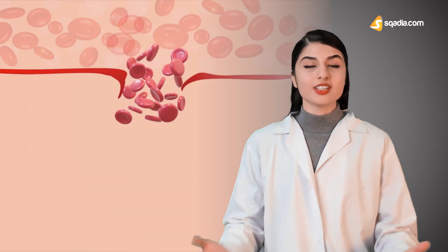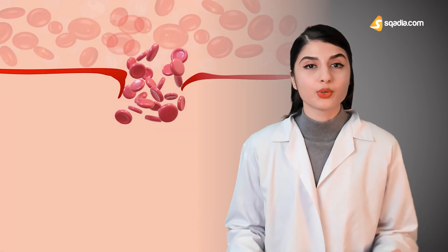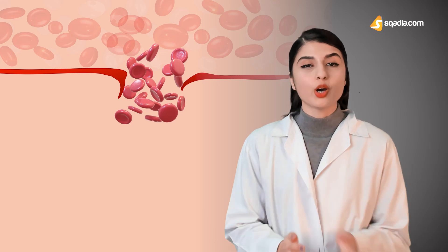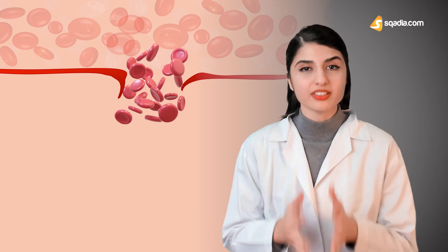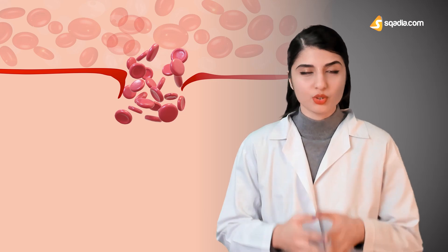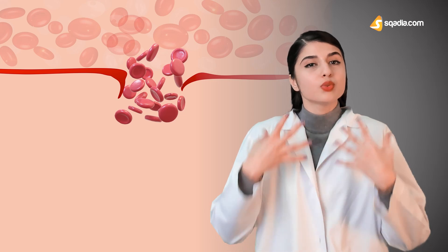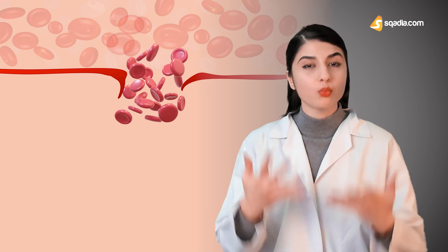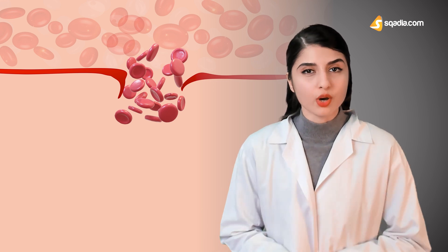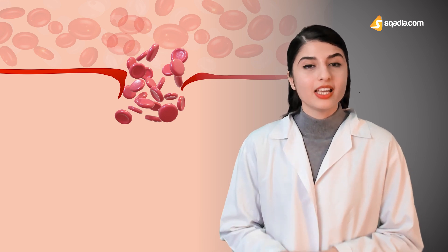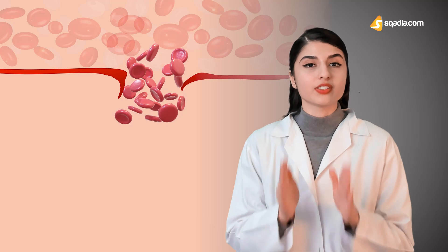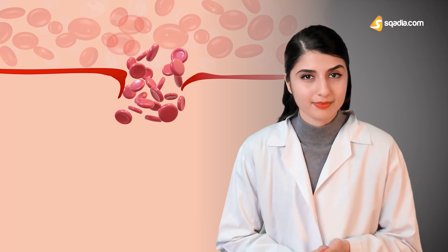A flow chart details all the processes occurring in fibrinolysis. This brings us to the end of the story of hemostasis. Due to vascular damage, blood starts to ooze out of the vessel, which must be stopped — and stopping this leakage is known as hemostasis.